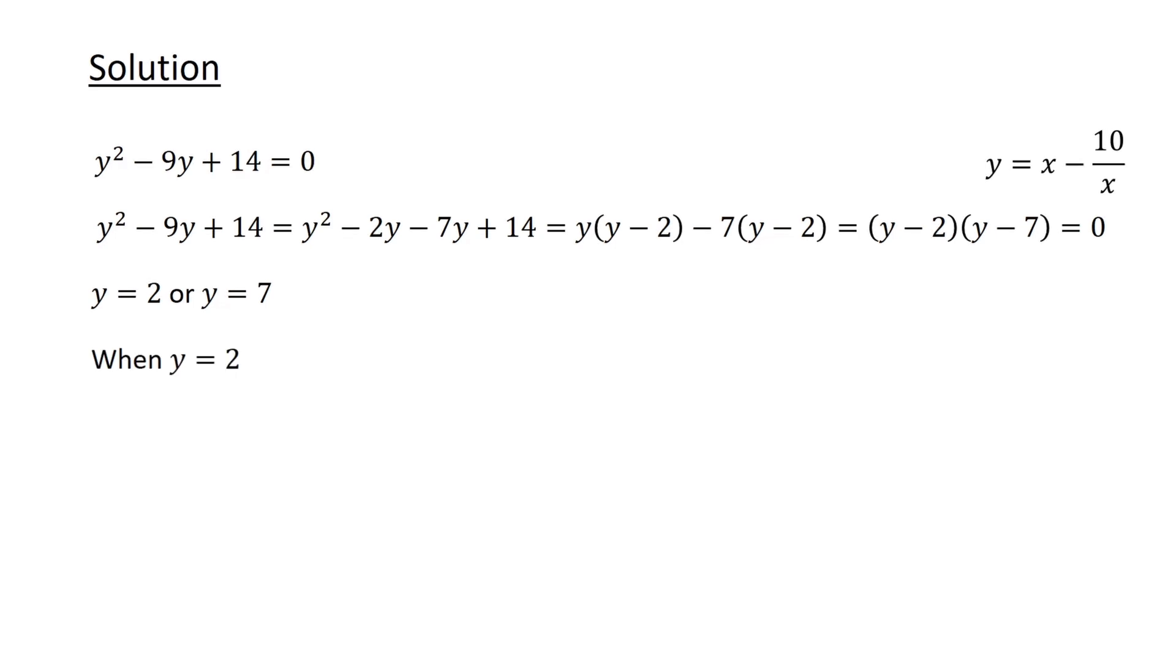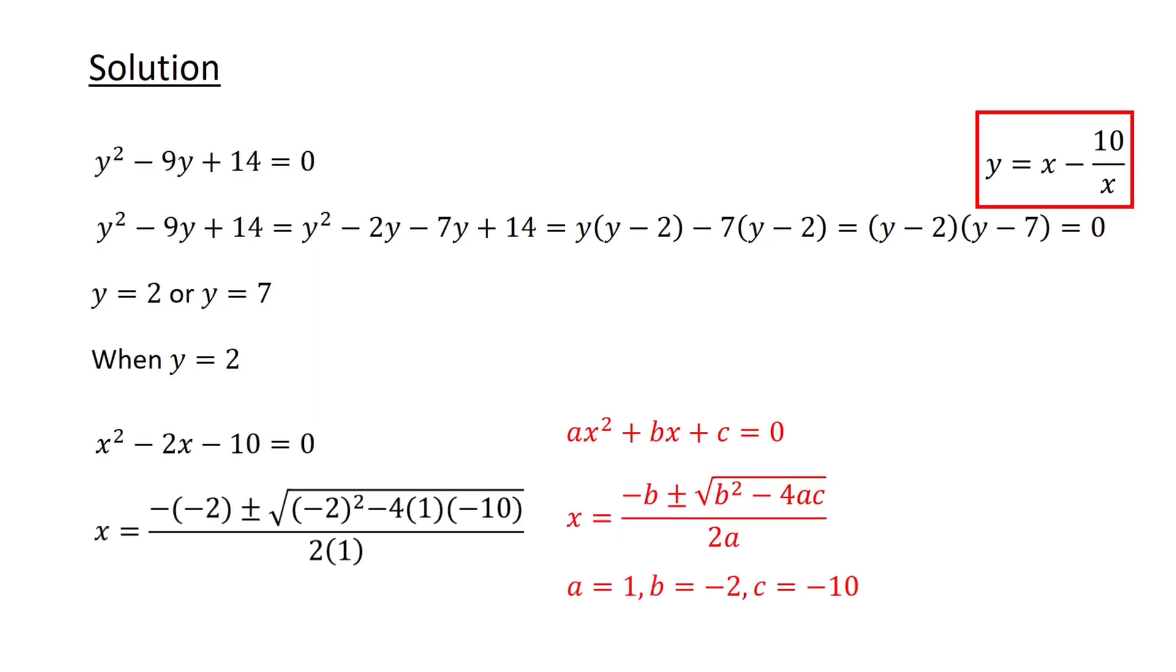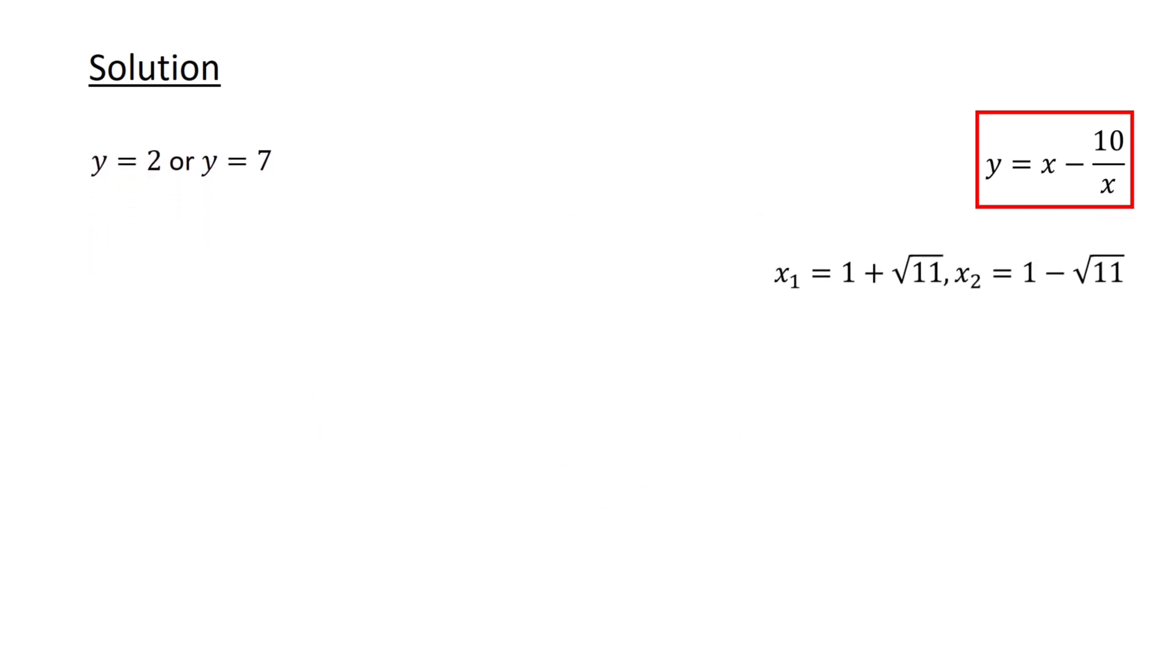When y equals 2, recalling that y equals x minus 10 over x, we have x minus 10 over x equals 2. Multiplying both sides of the equation by x to clear the denominator and rearranging, we get x squared minus 2x minus 10 equals 0. Recalling the quadratic formula, with a equals 1, b equals minus 2, and c equals minus 10, we obtain two solutions to our original equation: 1 plus root 11 and 1 minus root 11.